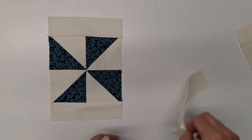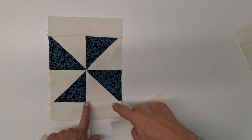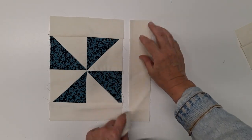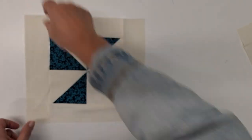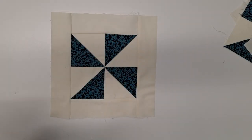Then we're going to take our 2 inch by 9½ inch strips, after we've got those sewn on and pressed, and sew those to the sides of our block. Then you'll just rinse and repeat.